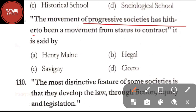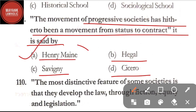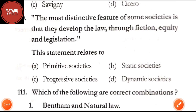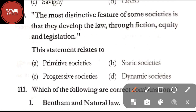Question number 108: which one of the following schools supports the view that a custom becomes law when it receives the stamp of judicial recognition by courts — option A: analytical school; option B: natural law school; option C: historical school; option D: sociological school. The correct answer is option A, analytical school. Question number 109: 'The movement of progressive societies has hitherto been a movement from status to contract' — said by Henry Maine, Hegel, Savigny, or Cicero. The correct answer is option A, Henry Maine.